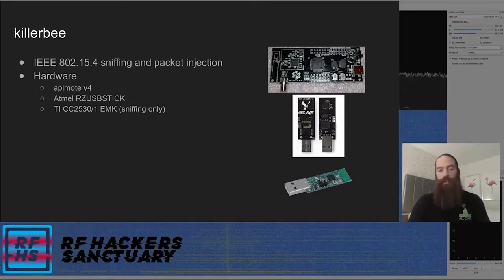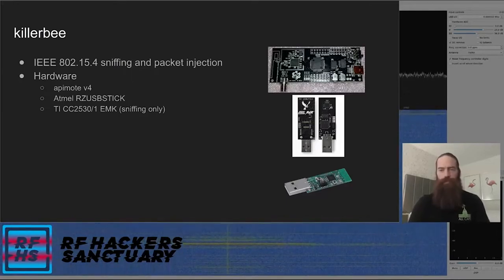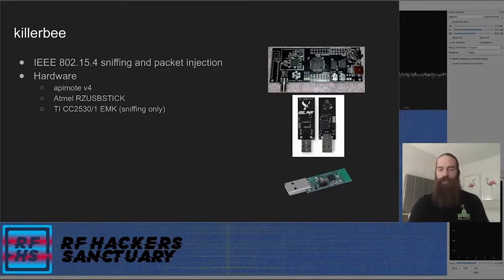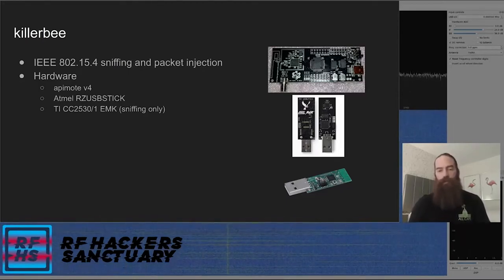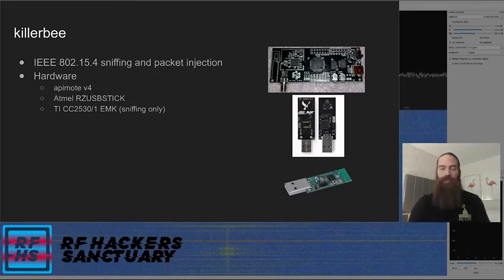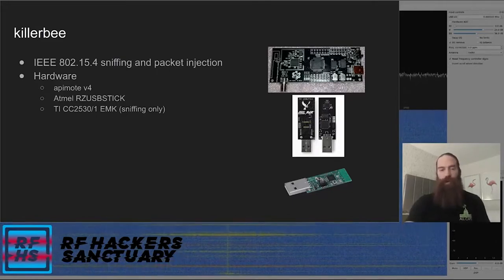Also the Atmel RZ USB stick, which unfortunately is no longer made — it was around $30 when available. This was something you could flash with the Killer Bee firmware and then use with tools like ZB Dump and ZB Replay. Something I haven't used but others have had success with is the TI CC2531 dongle, which as I understand it is capable of sniffing only with Killer Bee — but it's another viable option for capturing 802.15.4 traffic.